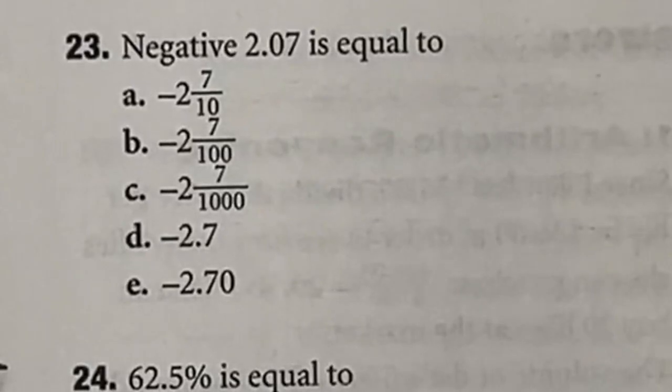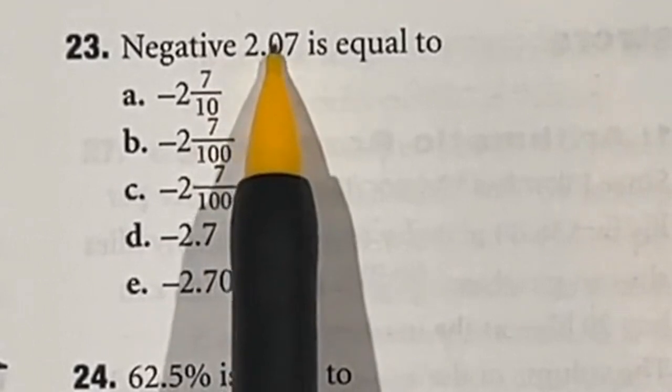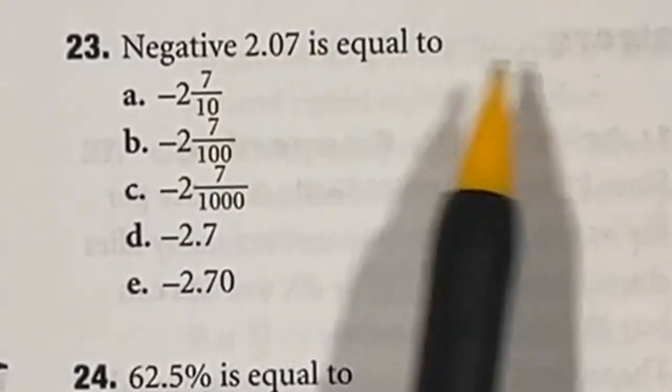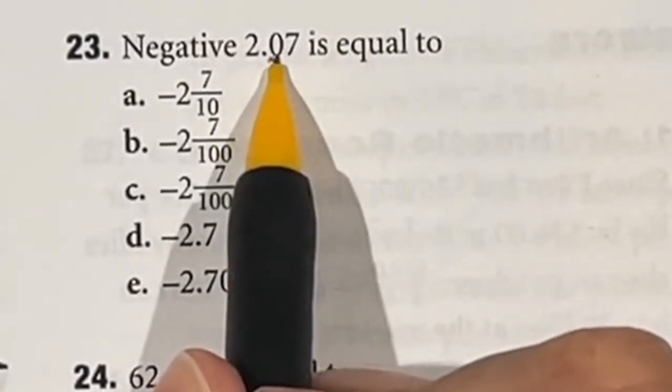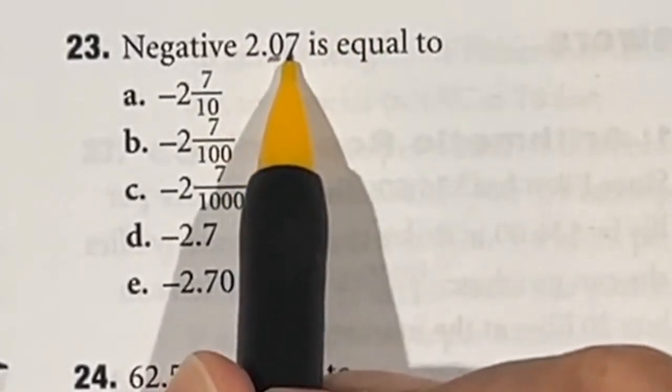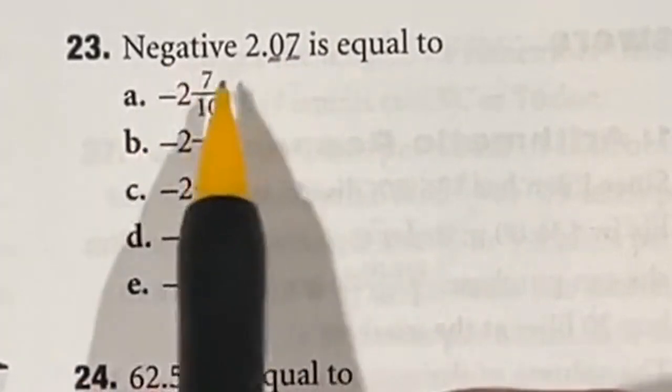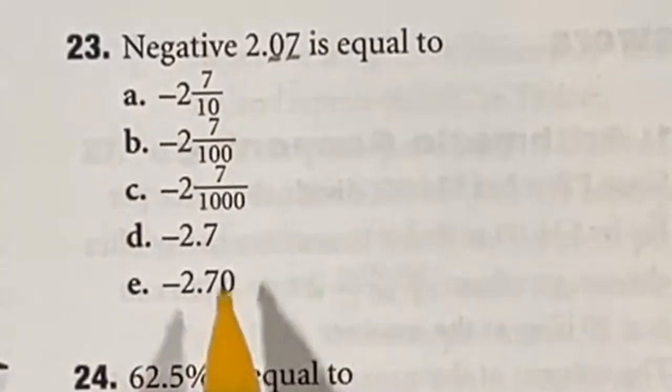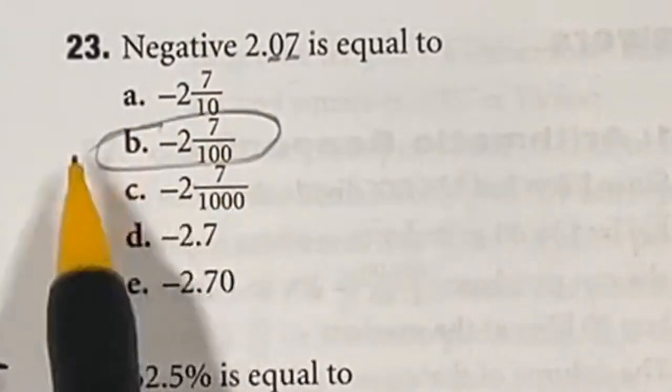23 is a question of place value so if you didn't know after the decimal point the way these read is tenths, hundredths, and then thousandths and so forth going on from there. Well if this is your tenths that means you have 0 over 10 there and if this is your hundredths that means you have 7 over 100. Now it does say it's negative 2.07 so we're looking for negative 2 with a 7 over 100 which is answer B.